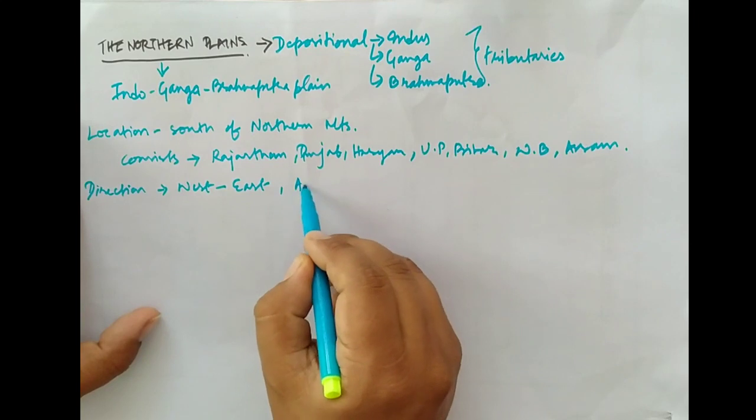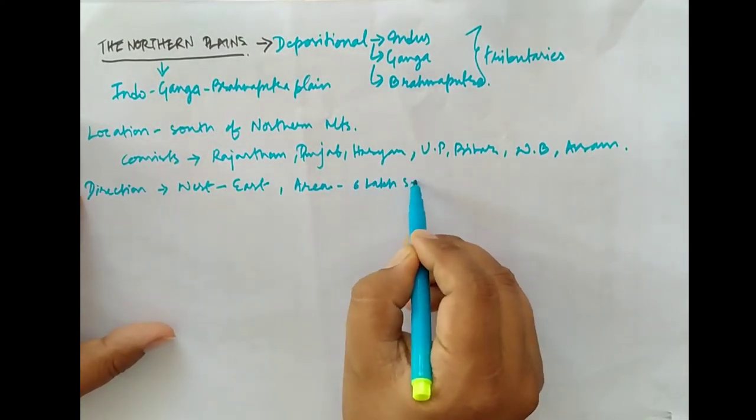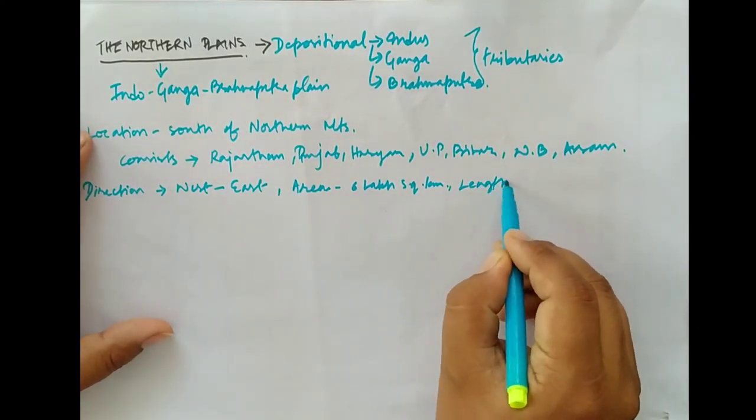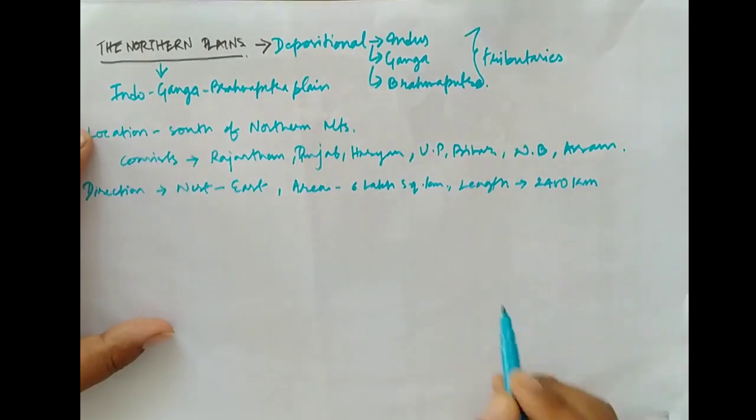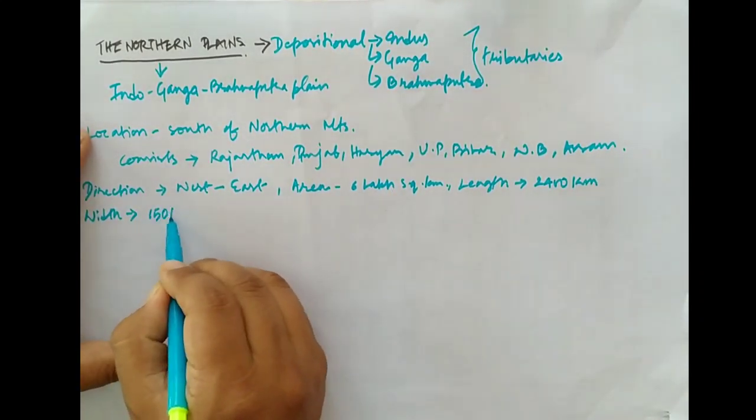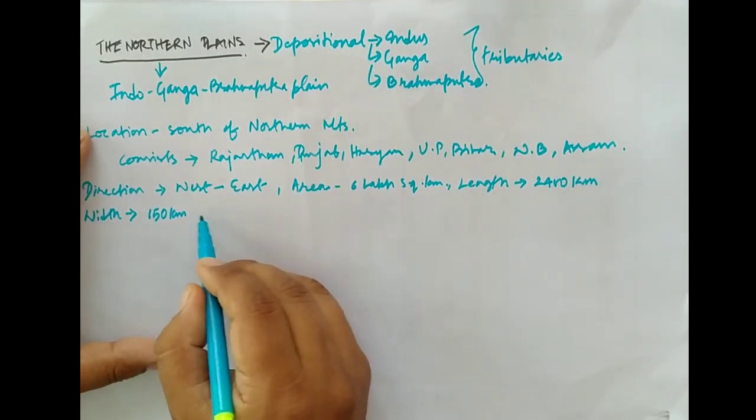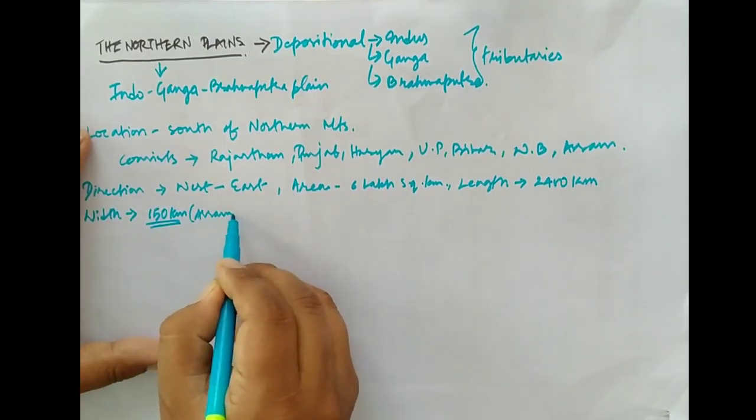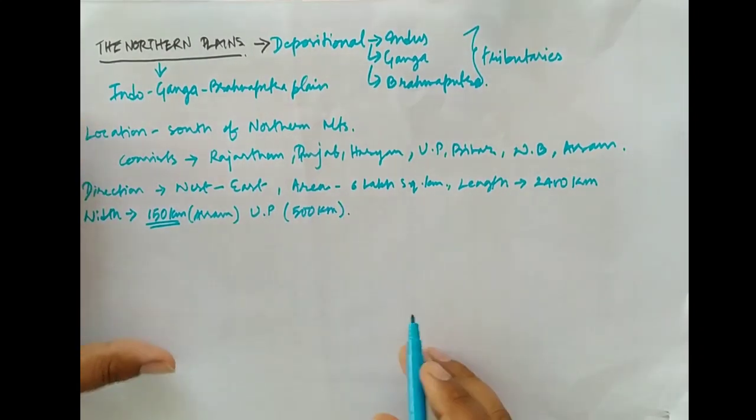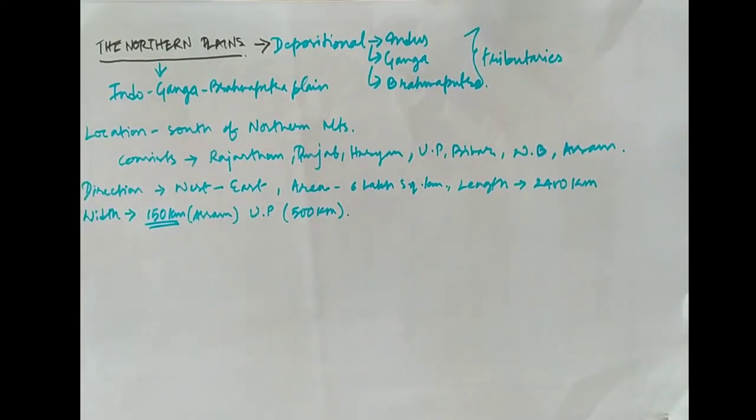The northern plains run for two thousand four hundred kilometers, and the width varies from place to place. It is around 150 kilometers in the Assam plain, whereas in the Ganga plain in Uttar Pradesh it is around 500 kilometers.